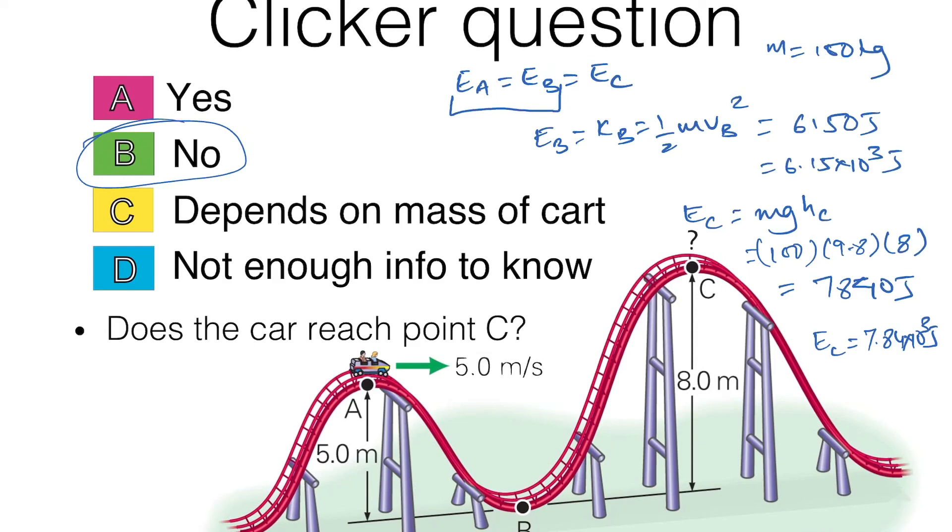Let's say if we can go in the reverse direction. Let's say this car starts from rest at point C and goes to point B and point A. Depending on that, we can find the velocity at point B. I would like you to try this problem again starting from rest at point C, finding the speed at B, and then find the speed when it gets to point A.